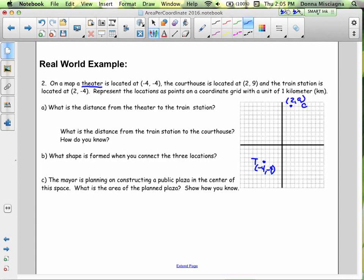And then we have the train station at 2, negative 4. So right there. And I guess we'll use S for train station since we already use T.